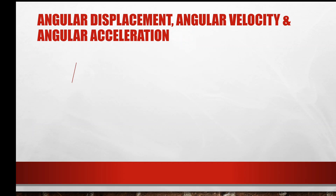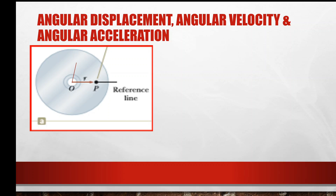Let's get started. First, we study about angular displacement, angular velocity, and angular acceleration. Suppose we have a disk that is rotated perpendicular to the plane surface, passing through point O, which is the center of the disk, and we choose an object P at a distance R from the center, with the x-axis as our reference line.